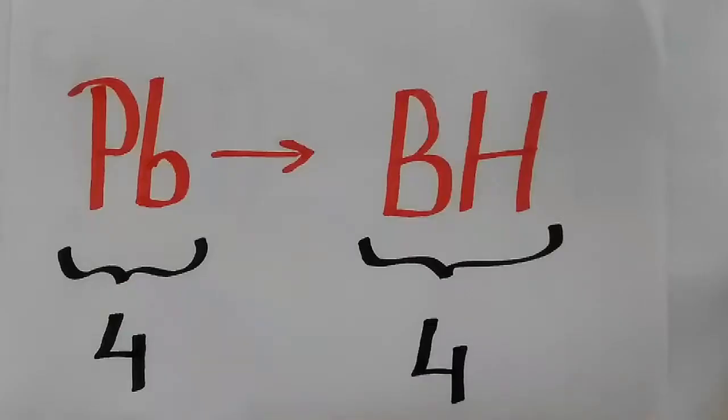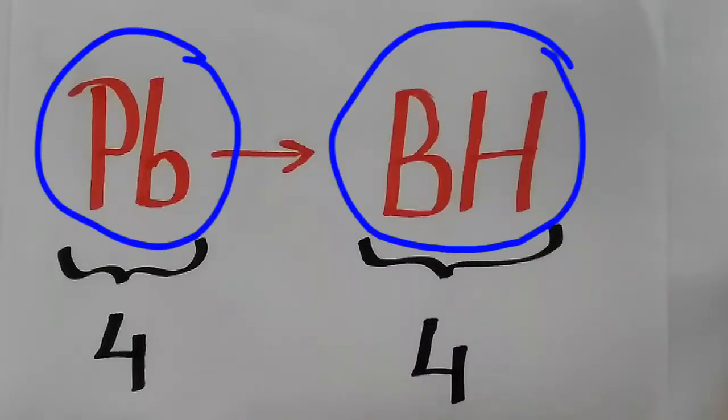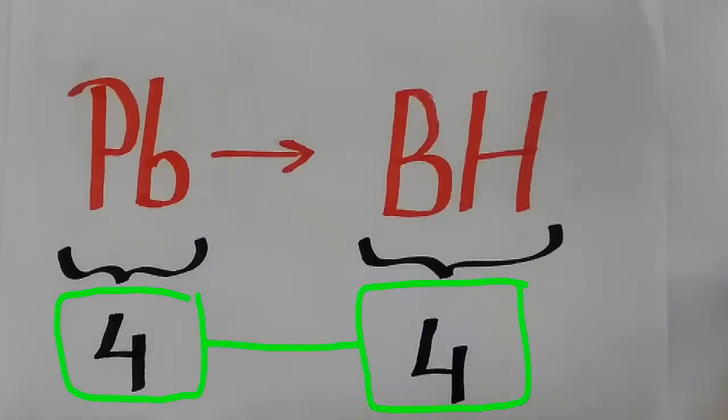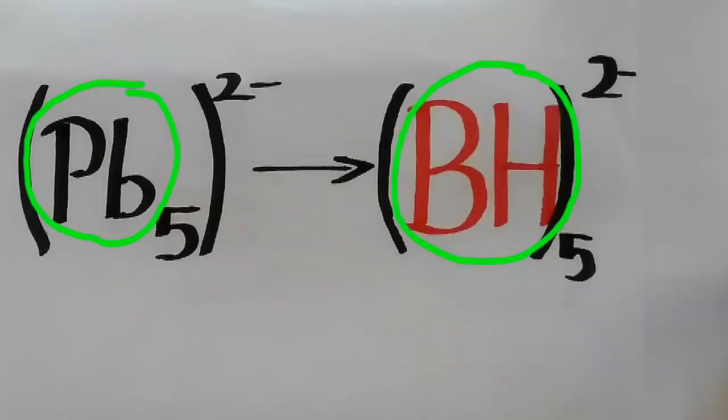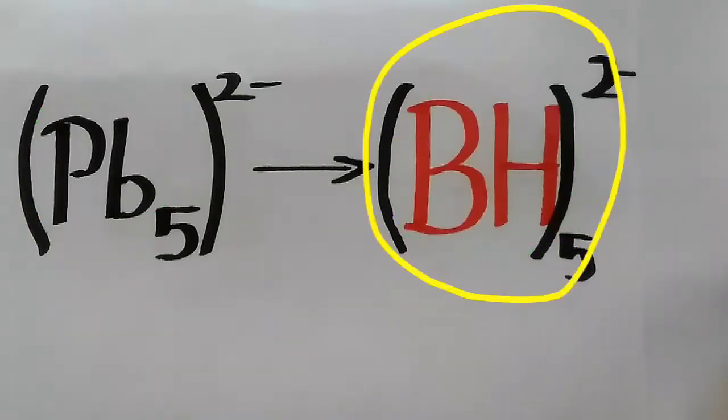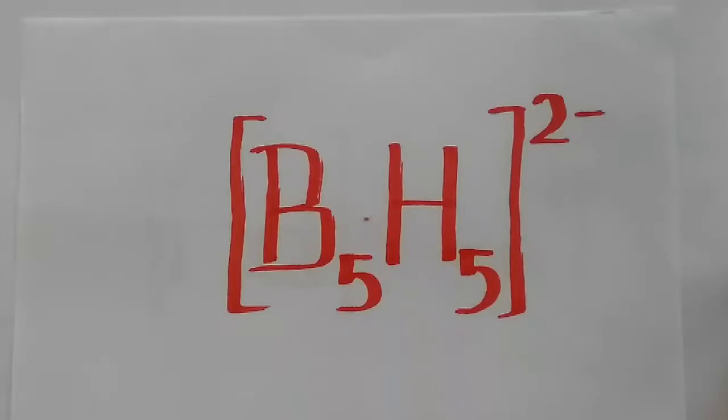Therefore, each lead molecule can be replaced by BH molecule, since both lead molecule and BH molecule have 4 valence electrons. Replacing Pb with BH we get B5H5 2-.